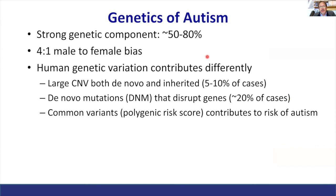So what about the genetics of autism? It's been recognized for decades that there's a strong genetic component. Lower bound estimates are at 50%, but based on more recent studies out of Sweden and elsewhere, most people now believe that number is closer to 80%. Another component of the disorder, which we believe is genetically based, is the four-to-one male-to-female bias. As children get higher functioning, the proportion of males rises to six to eight to one.